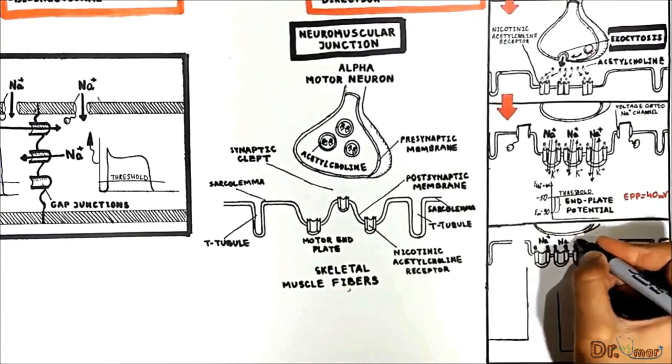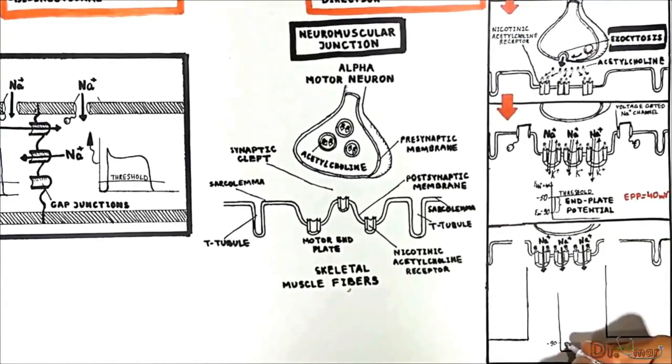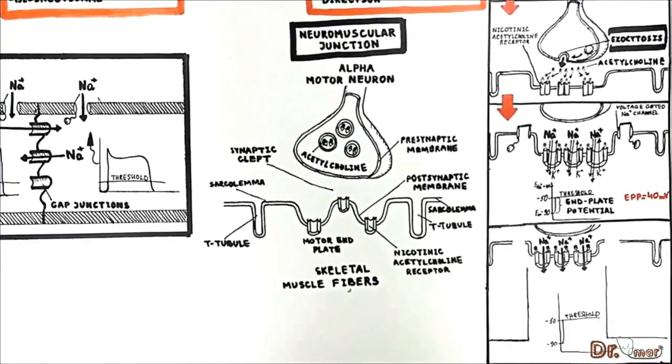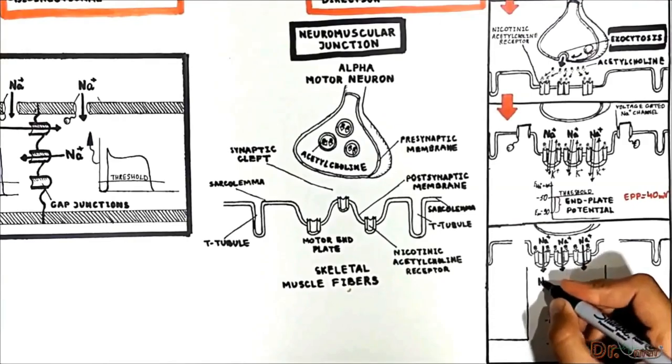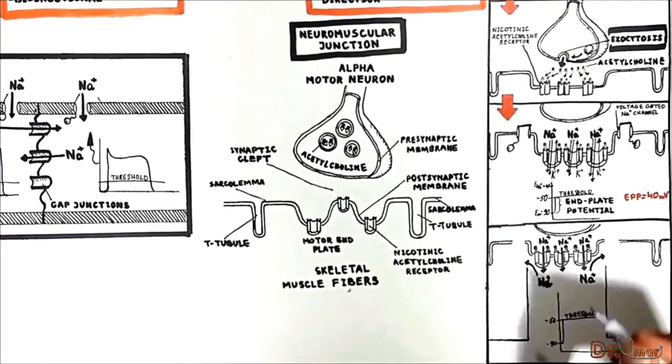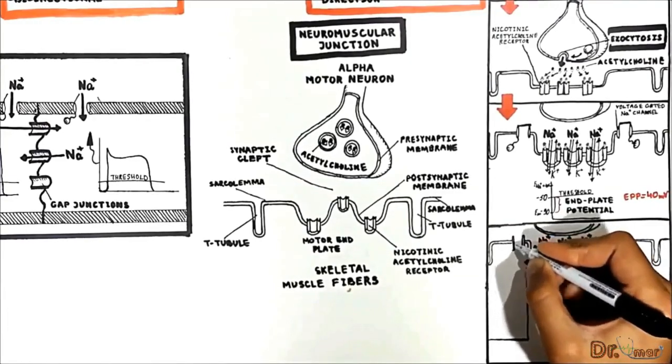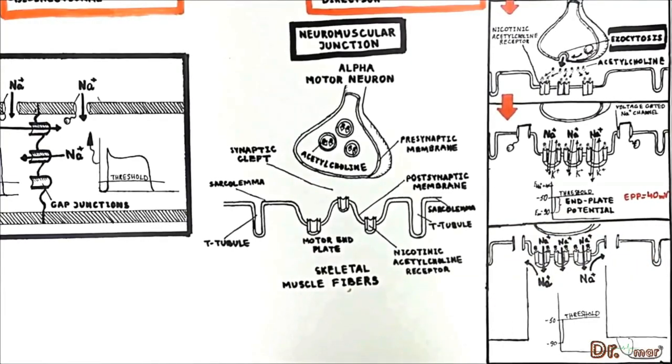It is very important to know that when sodium fluxes in and the end plate potential reaches the threshold of negative 50 mV, the sodium then spreads to the outside of the synaptic regions to adjacent muscle fibers whose sarcolemma is rich in voltage gated sodium channels.